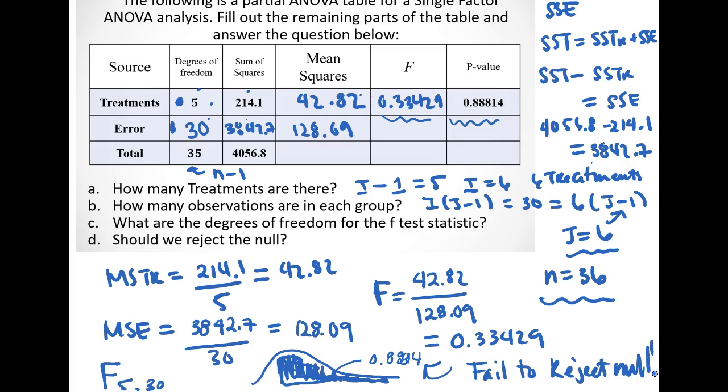In other words, it doesn't seem like the treatment means are different enough to say that the difference is significant. And that's how we can use an ANOVA table and fill it out so that we can get an F test statistic for a single factor ANOVA F test.